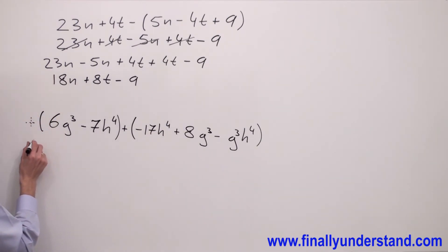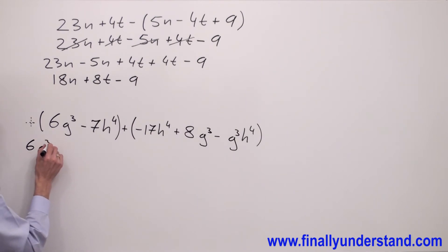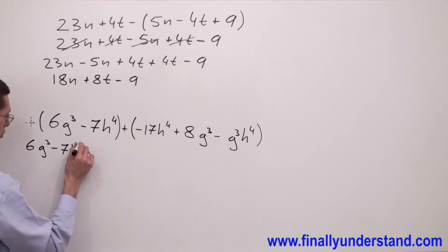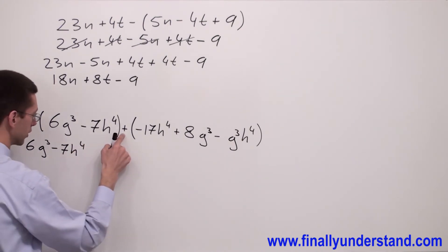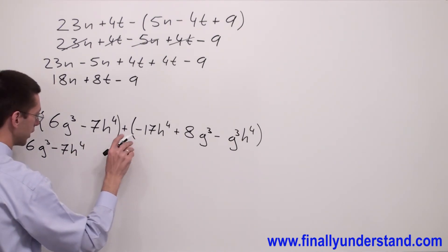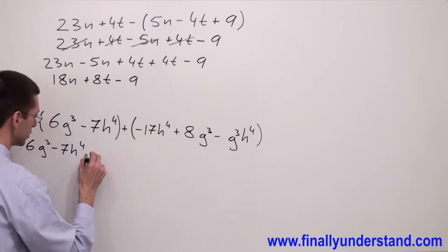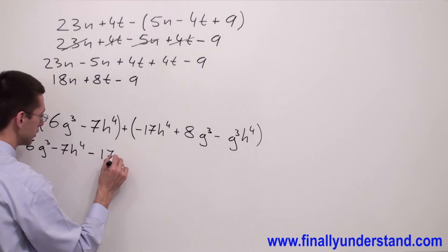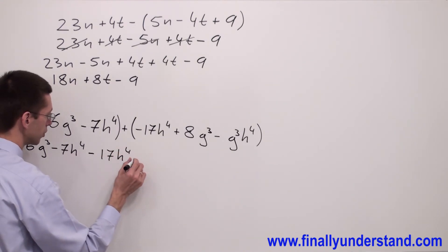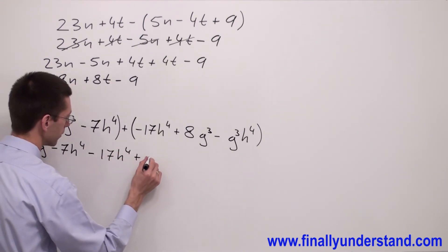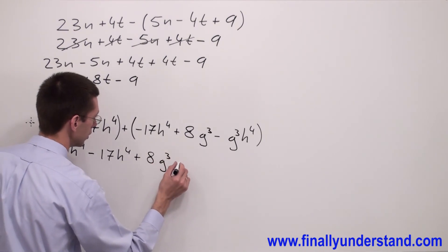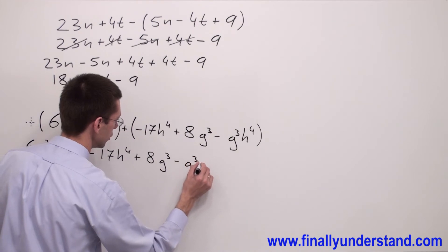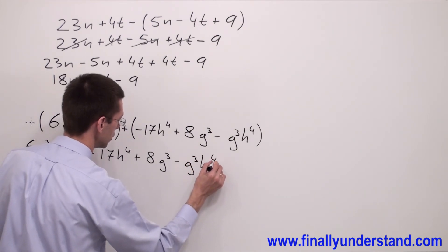I have 6g to the third minus 7h to the fourth. Because I have a positive sign, I don't change any sign inside of the parenthesis — I simply copy everything down: minus 17h to the fourth plus 8g to the third minus g to the third h to the fourth.